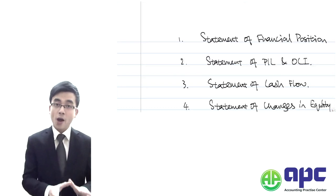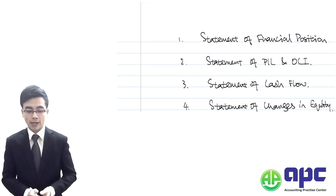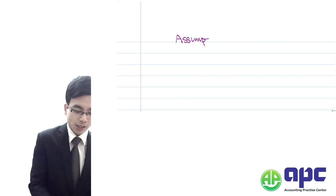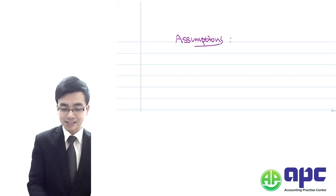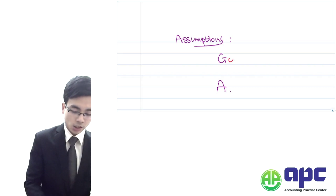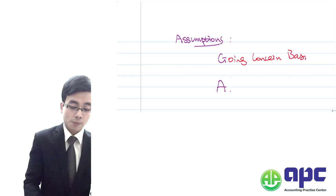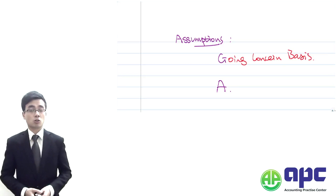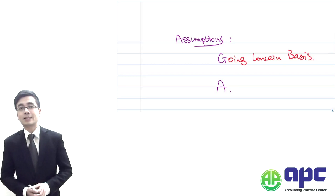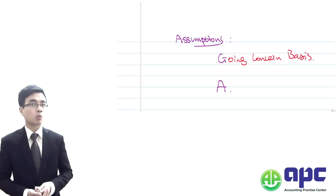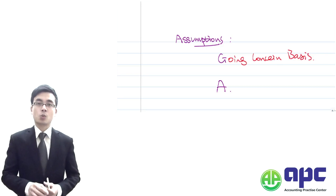IAS Number 1, when preparing those financial statements, follows two assumptions detailed in the Conceptual Framework — we can call them G and A. The first, G, refers to the Going Concern basis. This means we prepare the financial statements — including non-current assets and non-current liabilities — on the assumption that the company is a going concern entity, which means the company can last for more than one accounting period.